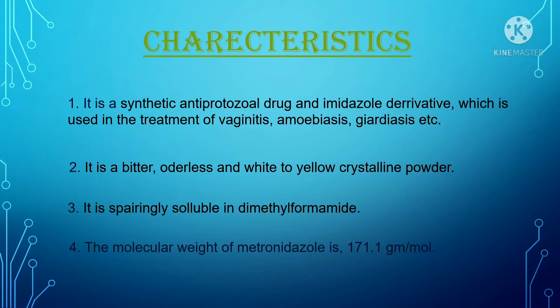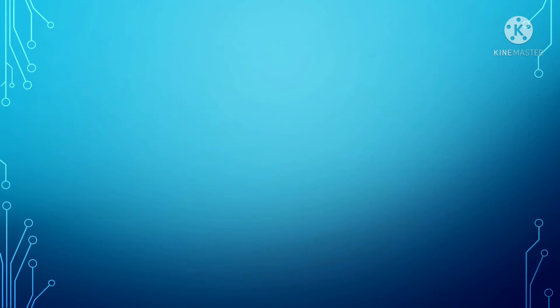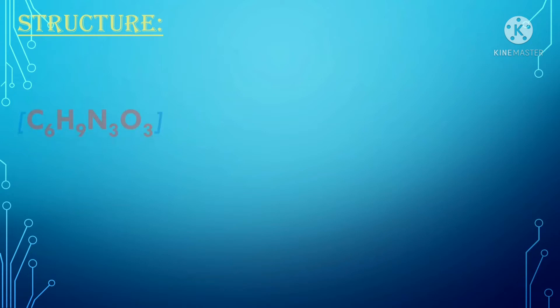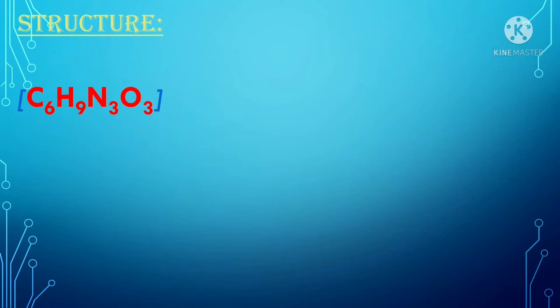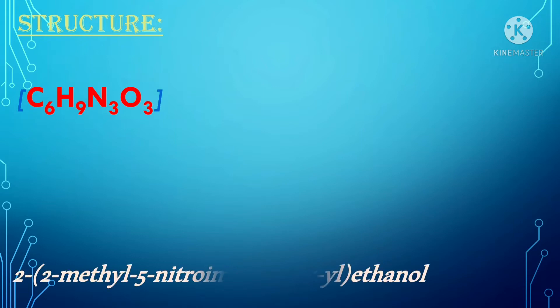The molecular weight of metronidazole is 171.1 grams per mole. Now, coming to the structure — the molecular formula of metronidazole is C6H9N3O3, and the IUPAC name of metronidazole is 2-(2-methyl-5-nitroimidazol-1-yl)ethanol. The structure of metronidazole is displaying on the screen.